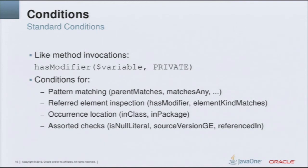It is useful sometimes that the AST bound to a variable contains or does not contain some other pattern. We can inspect the element that corresponds to whatever is bound to a variable, so we can check, for example, if you are assigning to a variable, whether the variable is volatile or not. We can inspect where the piece of code that fulfills the source pattern occurs — in what class, in what package — so that if you are in a bridge that bridges some new API to some old API, we can disable the warnings. And there are some other random checks for null literal and so on.